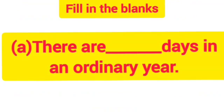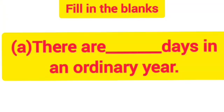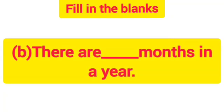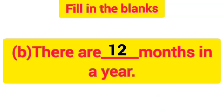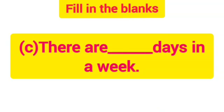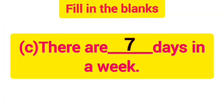Now we will do some fill in the blanks. The first one is: there are how many days in an ordinary year. In a calendar, we have seen there are 365 days in an ordinary year, so the answer is 365. Second one is: there are how many months in a year. We have learned there are 12 months in a year, so the answer is 12. Next one is: there are how many days in a week. We have learned there are 7 days in a week, so the answer is 7.